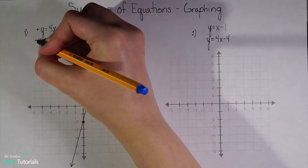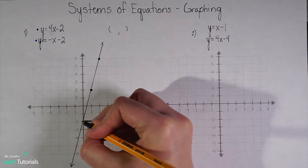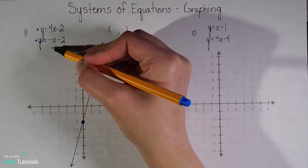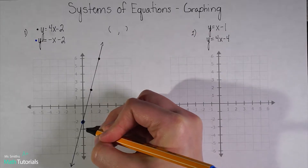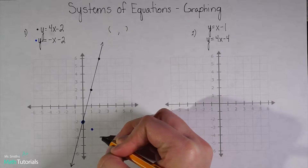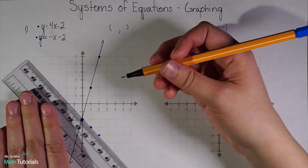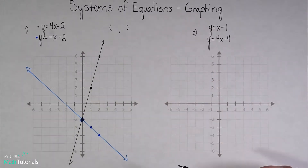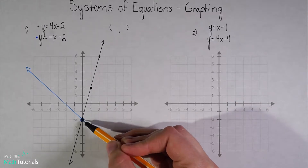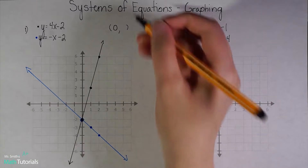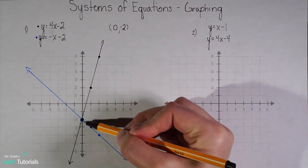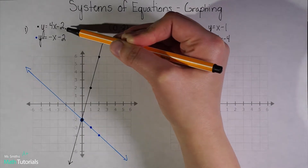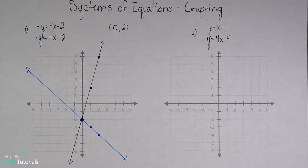I'm going to graph my next line in blue. My y-intercept is again at negative 2. My slope is negative 1 over positive 1, so I move down 1, over to the right 1, and connect those points. We can clearly see that these two lines cross at an exact point: 0 on the x-axis and negative 2 on the y-axis. Some of you might have guessed that when you saw both y-intercepts were negative 2, but we needed to graph it out to confirm.